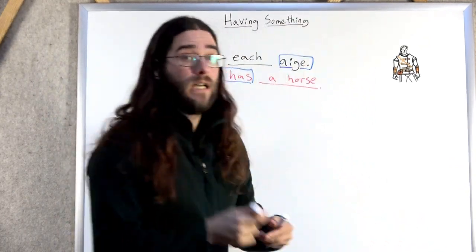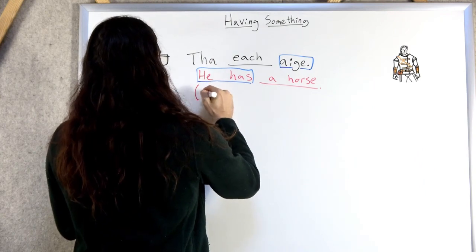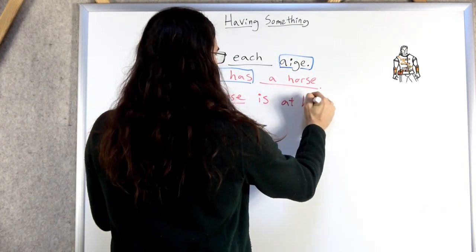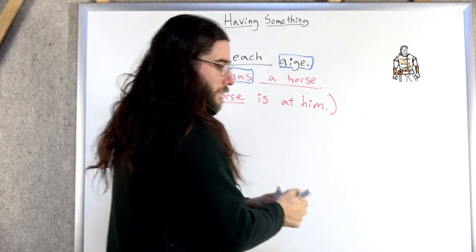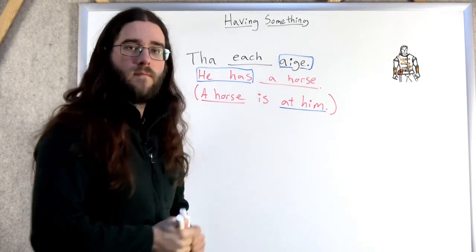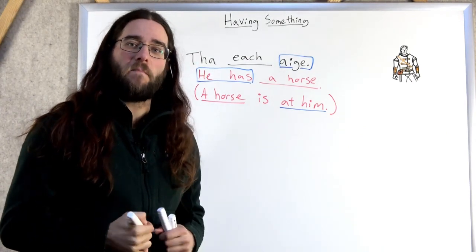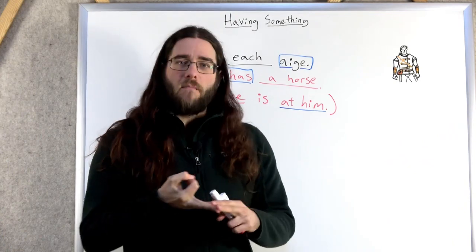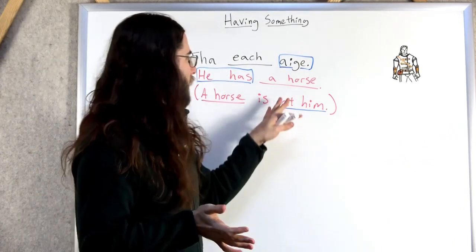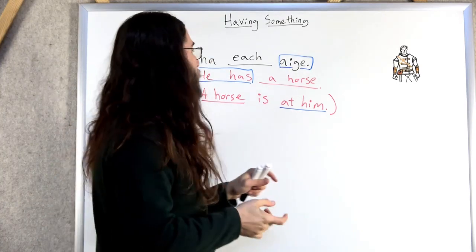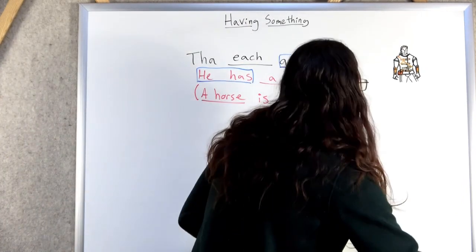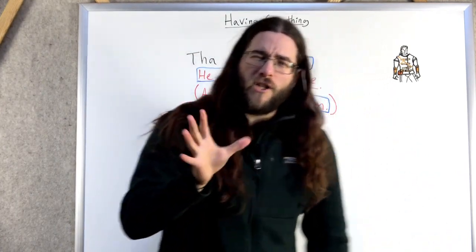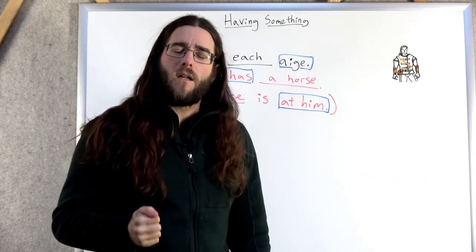And what we're actually saying, literally, is a horse, a horse is at him. It's at him. A horse is at him. So if you have possessions, like a car, or an apartment, or a tablet, or a phone, anything like that, it's going to be at you. Yeah. So we're literally saying, a horse is at him. That's what eke means. Eke means at him.